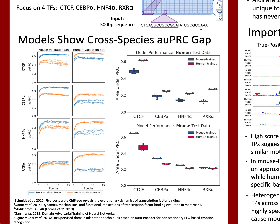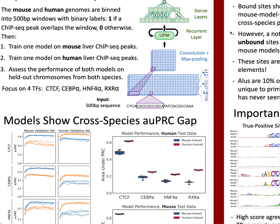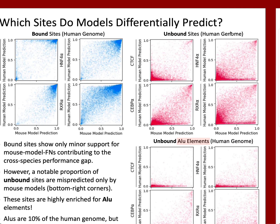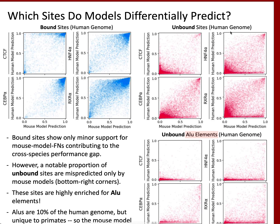To investigate the source of this cross-species gap, we looked for sites in the human genome that were differentially predicted between mouse and human models — basically asking which sites in the human genome did only the mouse model mispredict. We found that while there are differentially predicted bound sites, the unbound sites showed more evidence of differential prediction across all TFs that would contribute to this cross-species gap. In particular, there was a large subset of unbound sites from the human genome mispredicted only by the mouse model.